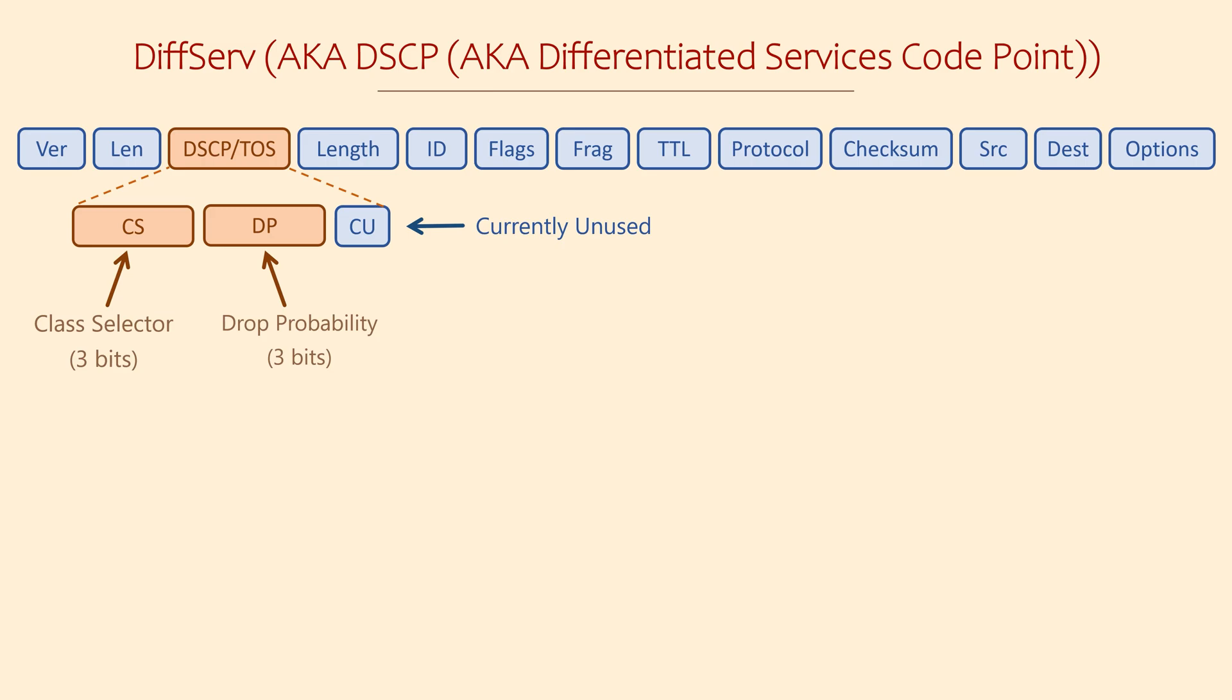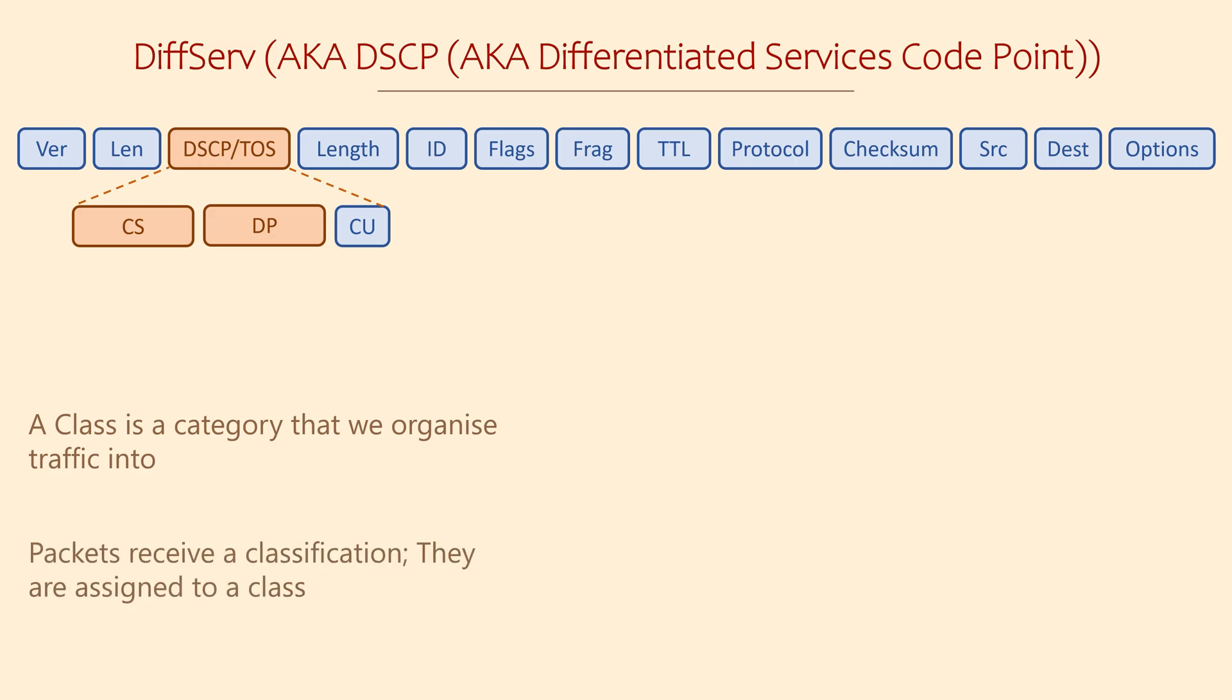First, we need to understand classes, which are also known as forwarding classes. A class is the category that we organize traffic into. For example, we could have a class for real-time traffic like voice and video. We could have another class for network traffic like OSPF and BGP. We can have a few classes, or we can have many classes. When a packet is in a class, our devices can make decisions based on that class. For example, a router would consider any traffic that is part of the real-time class to be very important. It will take action to make sure that it delivers those packets on time.